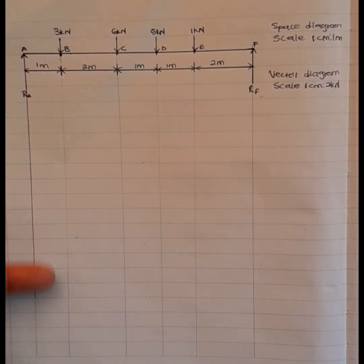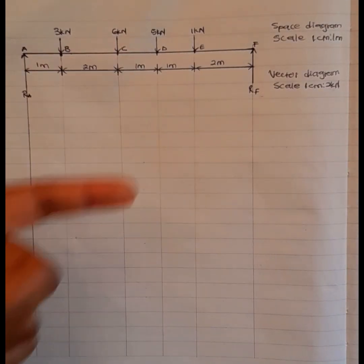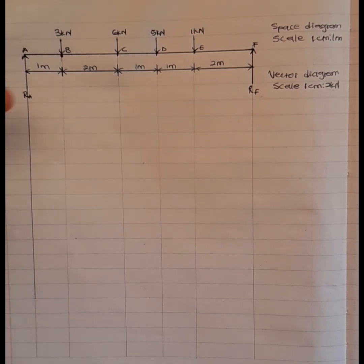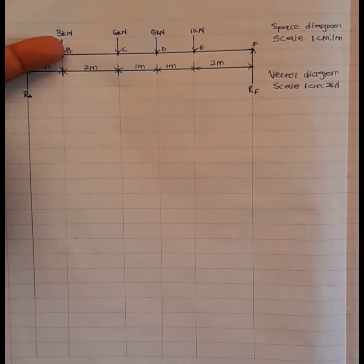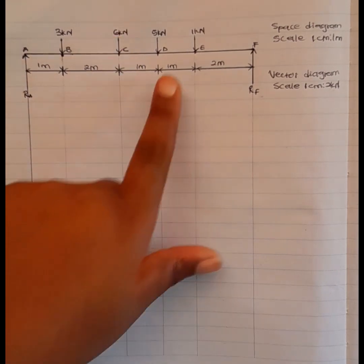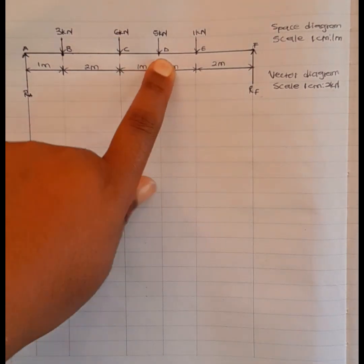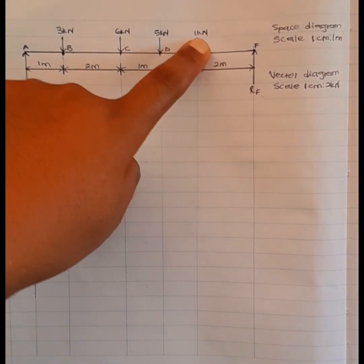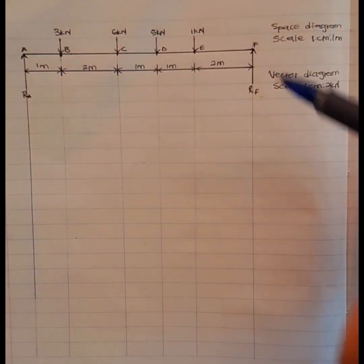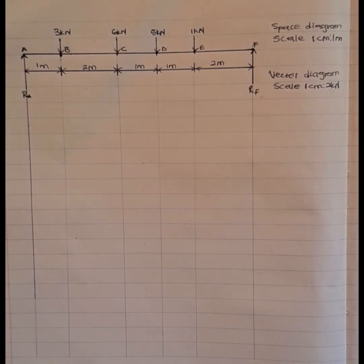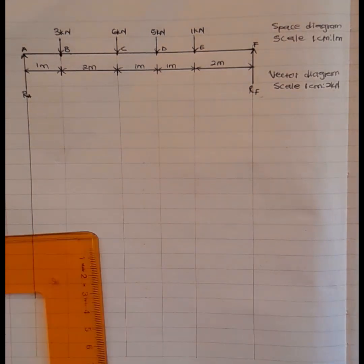You arrange your forces downwards. Force A is RA, force B is 3 kilonewtons, force C is 6 kilonewtons, force D is 5 kilonewtons, force E is 1 kilonewton, and force F is RF.